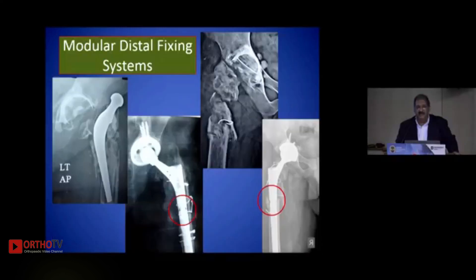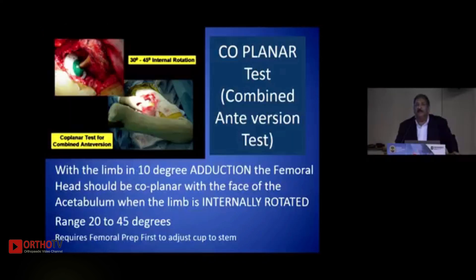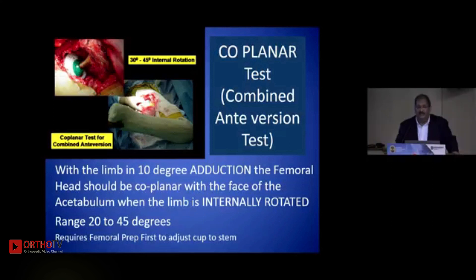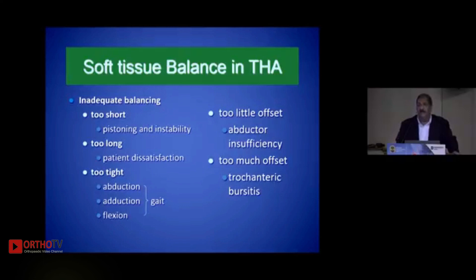These systems are useful in complex revisions or complex primary cases. The coplanar test is now accepted as the gold standard — a combined anteversion of both the femur and the acetabulum is the goal. This is achieved when the limb is adducted and internally rotated to get the face of the acetabulum coplanar with the femoral head.